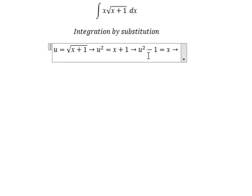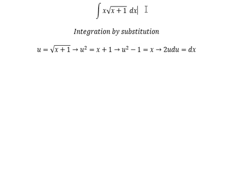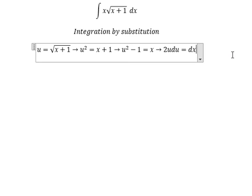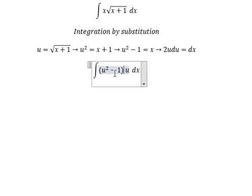Later we do the derivative for both sides. The square root of x plus 1 we change for u. x we change for u square minus 1. dx we change for 2u du.